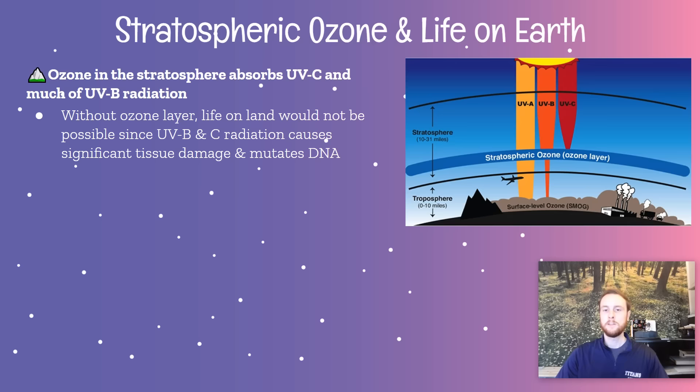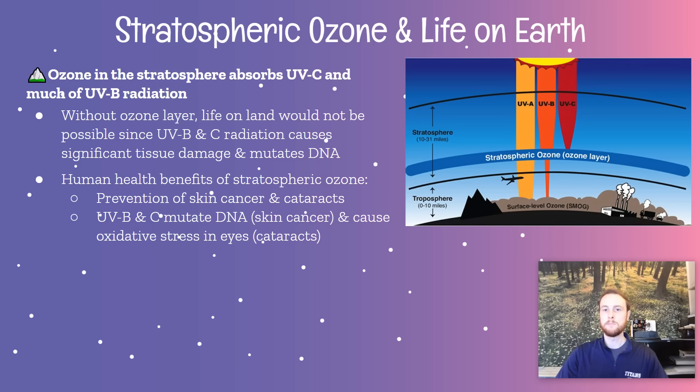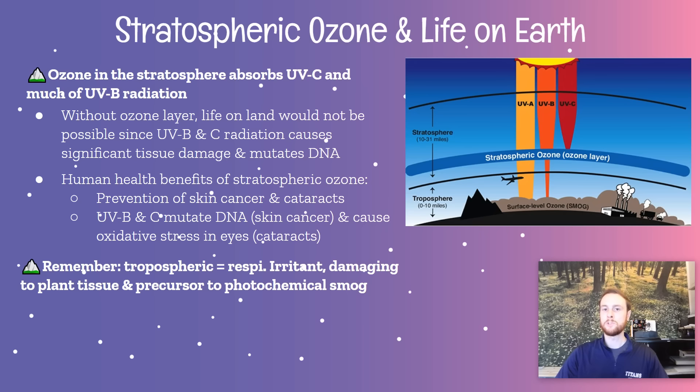Specifically for humans, it's going to benefit us by protecting our cells, especially in our skin, from experiencing mutation due to the high levels of energy that these waves carry. So it's going to prevent skin cancer, and it's also going to prevent cataracts, which is a disease that happens in the eyes as UV radiation is also damaging to the cells of the eye. Stratospheric ozone is very beneficial, but tropospheric ozone down near Earth where we live has some human health consequences that are negative.